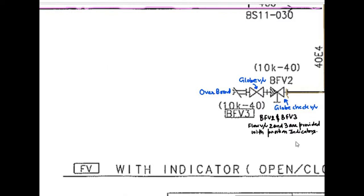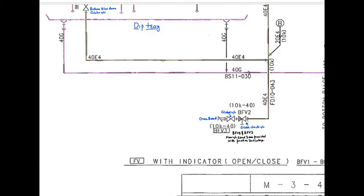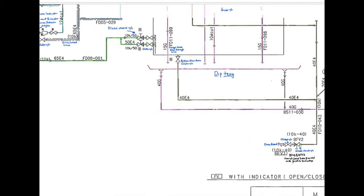Now, again from the remarks, we can see VFV2 and VFV3. Flow valve valve V2 and V3 are provided with position indicators. Here, you can see this remark is there in the downside. With indicator open and close, VF1 to VF9. And the other thing is, all the drip trays, they are going to bottom bilges.